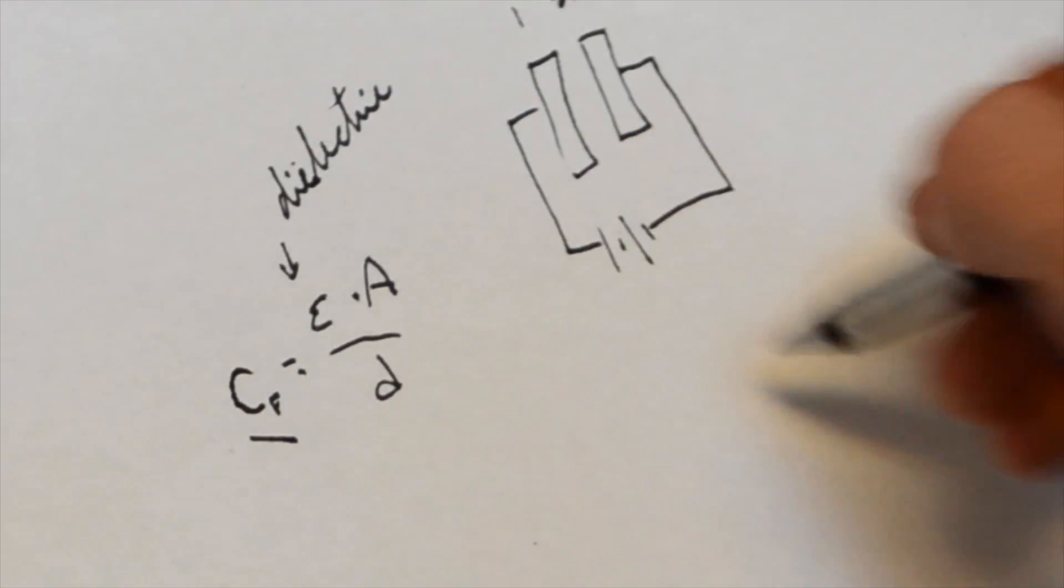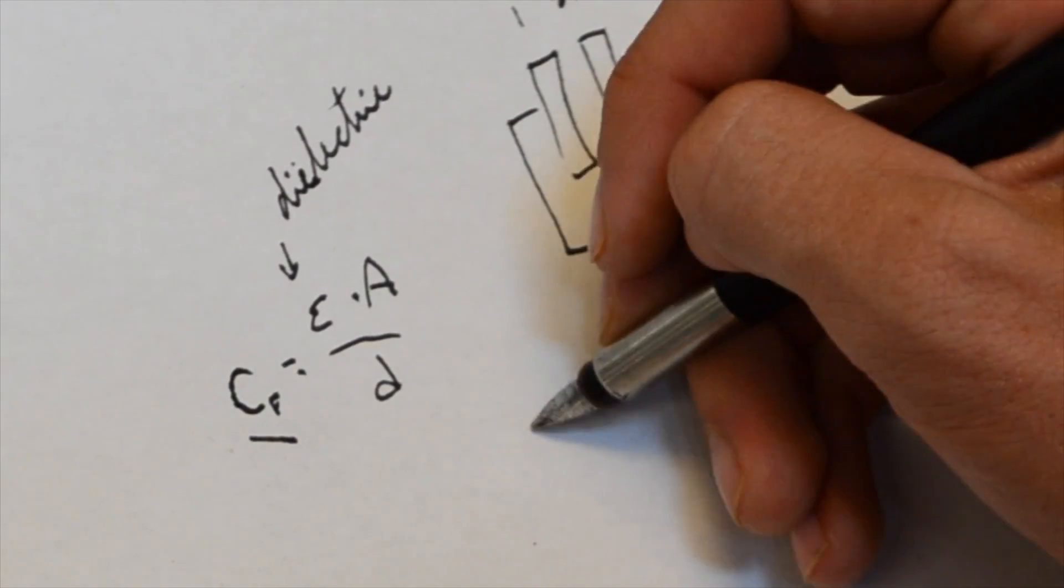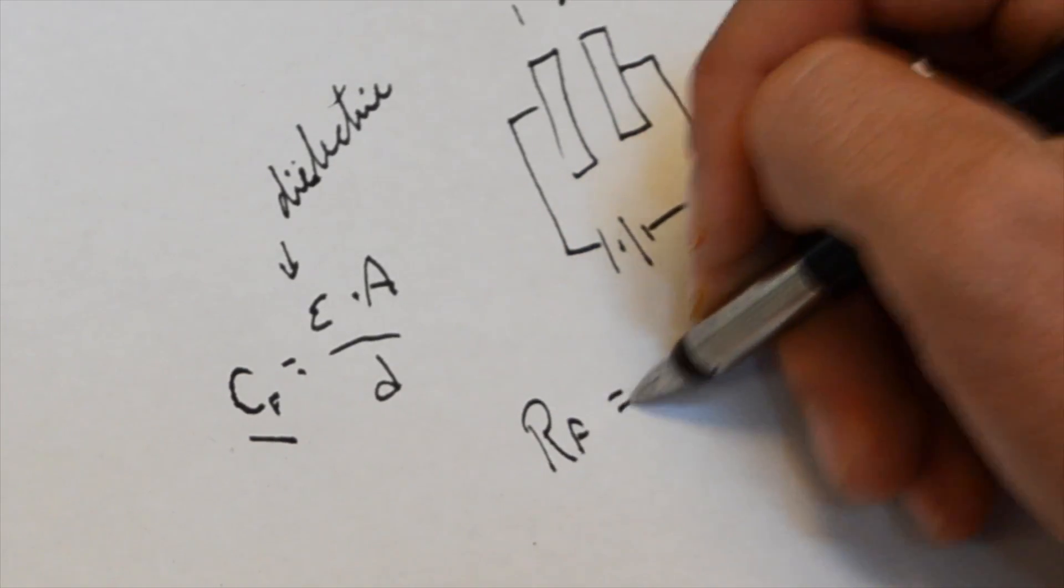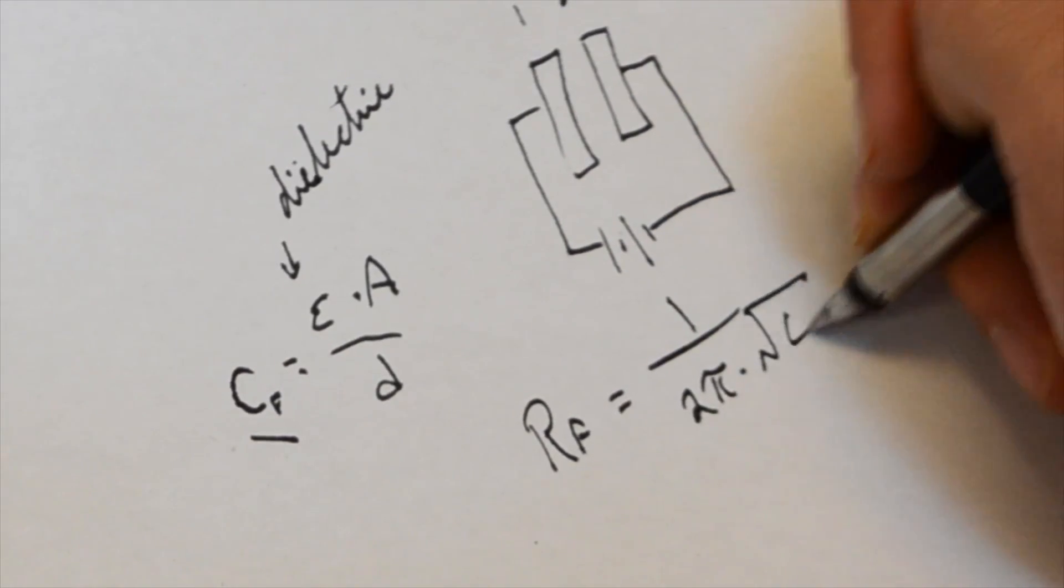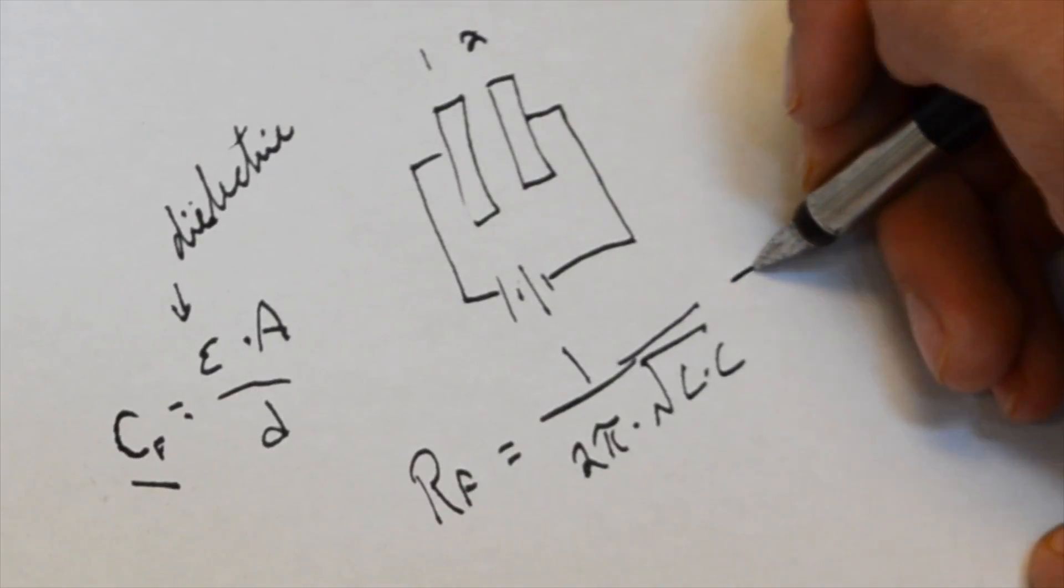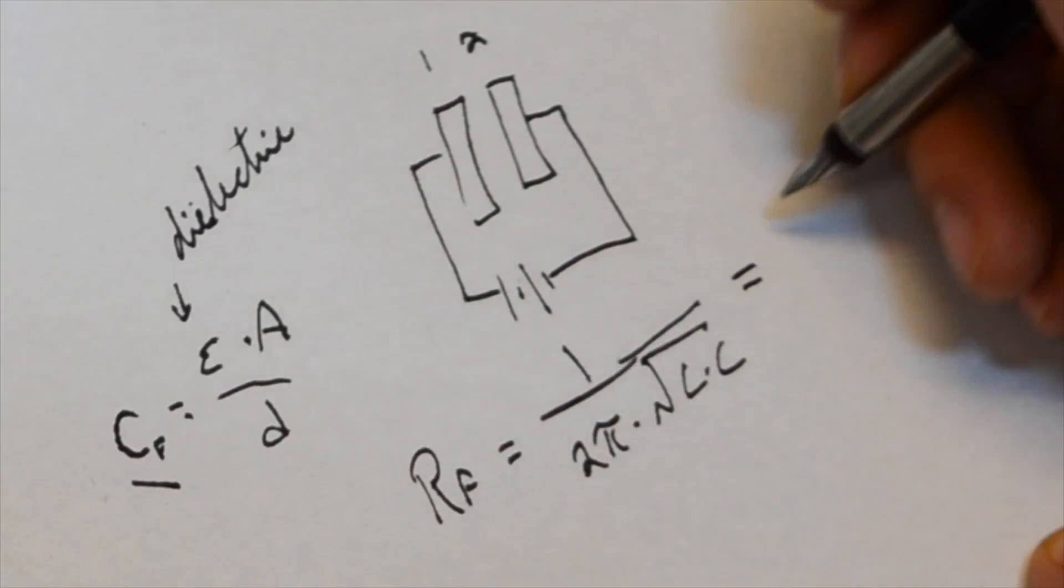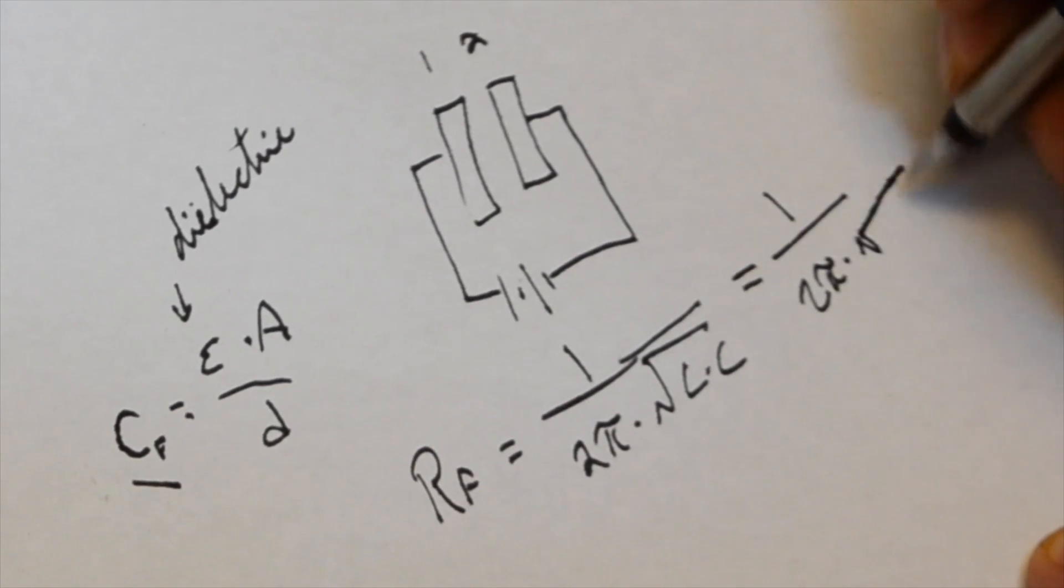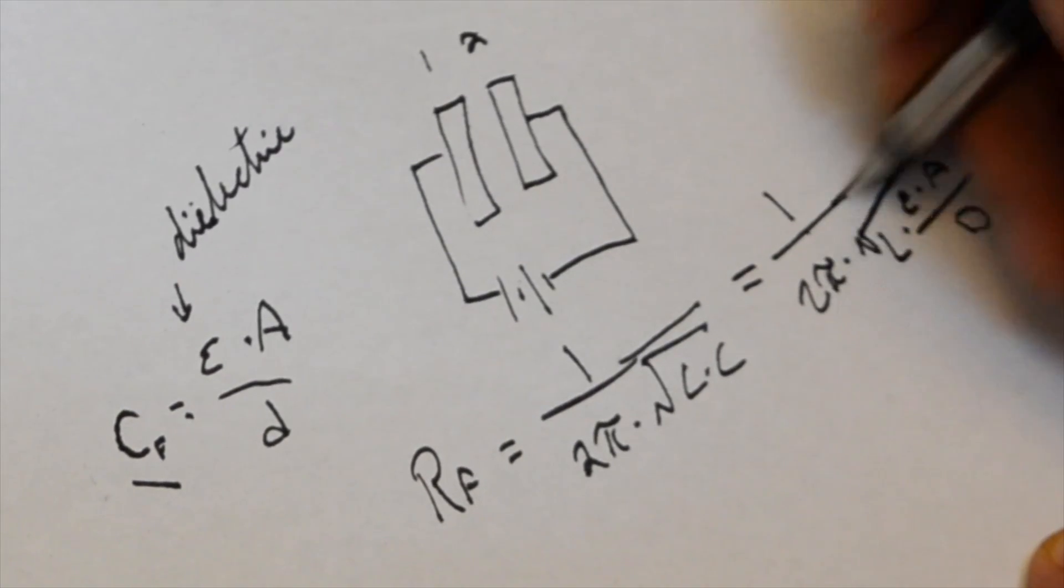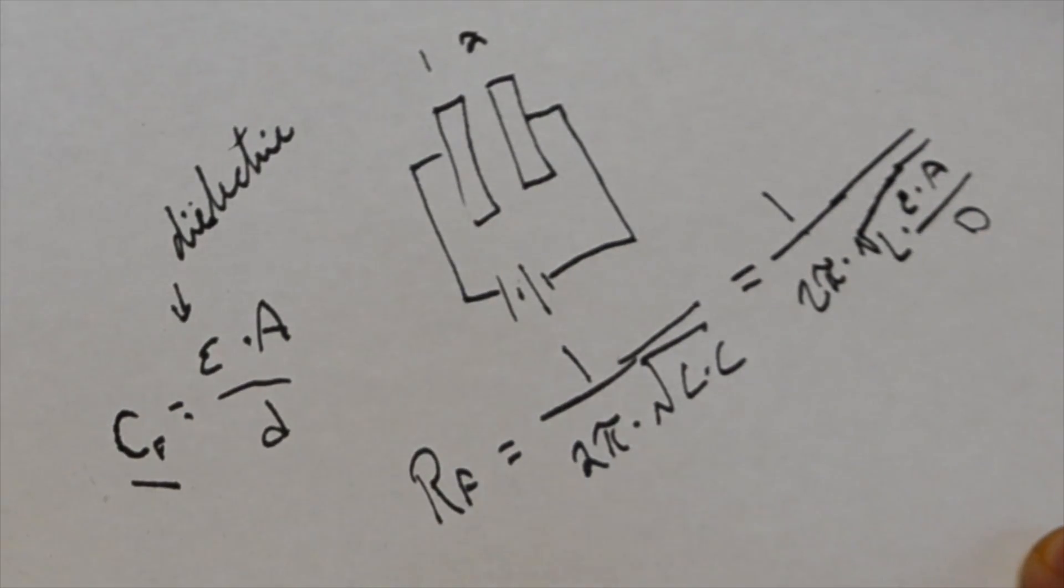And so now we can relate the capacitance back into a formula for resonance frequency, which is resonance frequency equals 1 over 2π times the square root of inductance times capacitance, which we can write as 1 over 2π times the square root of inductance times the dielectric times the area divided by the distance. And that is going to give us the new resonant frequency that we're creating.